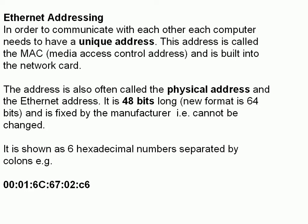Now, Ethernet addressing. In order to communicate, each computer on the network needs to have a unique address. Ethernet, or the Ethernet protocol, has an address called the MAC address — the Media Access Control address — and it's actually built into the network card, or the wireless card. It's also called the physical address as well as the Ethernet address. It's 48 bits long in the old format; the new format is 64 bits long. It's fixed by the manufacturer and can't normally be changed. It's shown as six hexadecimal numbers separated by colons.